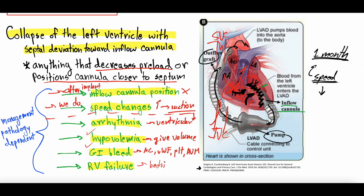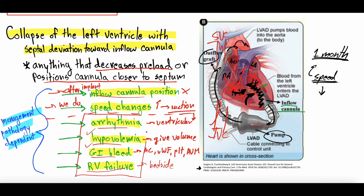This is where we really need to use bedside ultrasound to look at things — it can assess right ventricular function and cannula position. These patients need telemetry monitoring to check for arrhythmias. We need to check their hemoglobin and, if needed, do a rectal exam to test stool for blood. Bedside ultrasound can also give a degree of volume assessment by looking at the inferior vena cava. The management is very pathology dependent. The common themes are a change in cannula position, a change in speed, or anything that decreases left ventricular preload. The timeline of when the patient is having suction events is revealing — early after implant suggests cannula position, after a speed change suggests speed, and otherwise think about arrhythmia, hypovolemia, GI bleed, and RV failure.